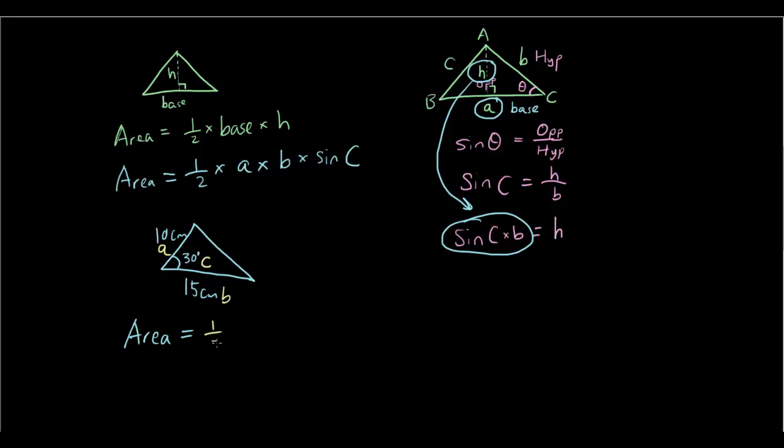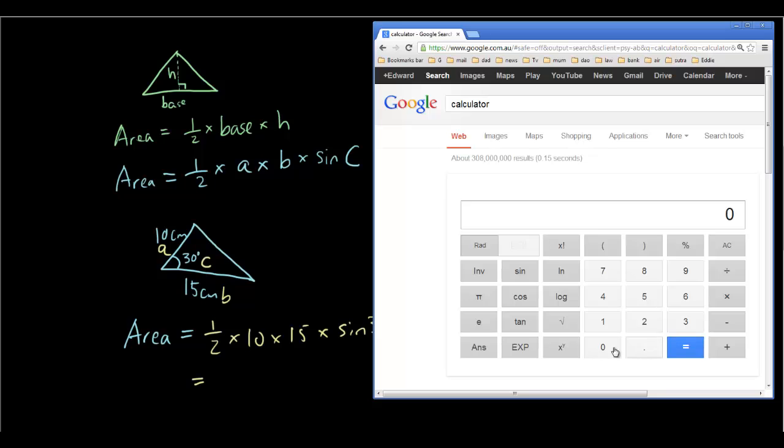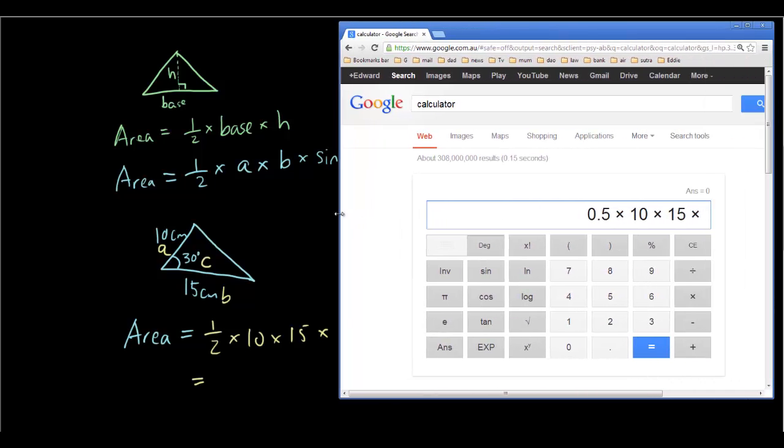So I have half times 10 times 15 times sine 30. And putting that into the calculator. So half times, make sure your calculator says degrees, 10 times 15 times sine 30.